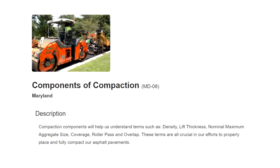Compaction components will help us understand terms such as density, lift thickness, nominal maximum aggregate size, coverage, roller paths, and overlap. These terms are all crucial in our effort to properly place and fully compact our asphalt.